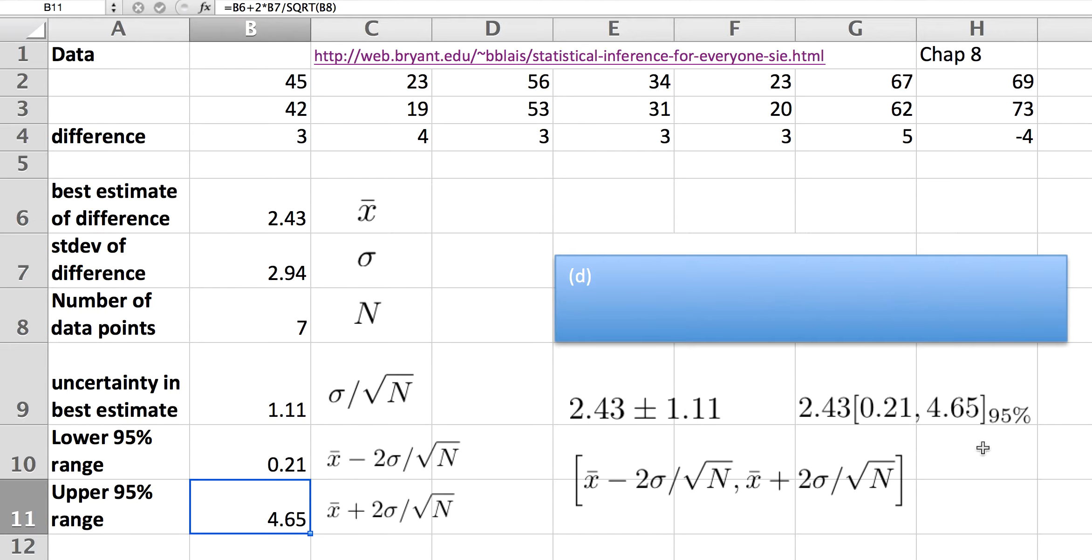There's a couple different ways of writing this. It's common in the scientific literature to simply write the best estimate plus or minus the uncertainty, knowing that really the 95% range is plus or minus twice this. A slightly clearer way, I think, is to write the best estimate and then put the actual range in brackets with an underscore for 95%. And this makes it clear that this is the 95% range.